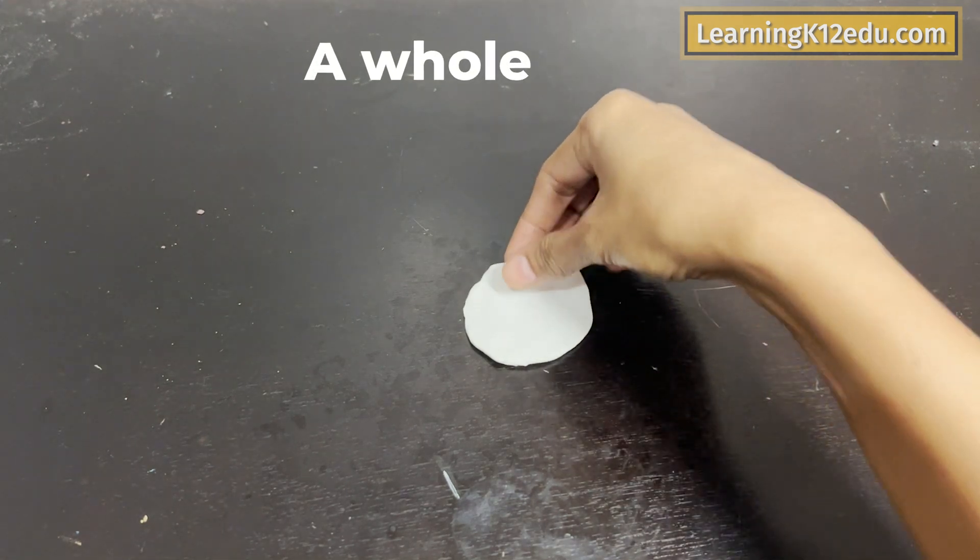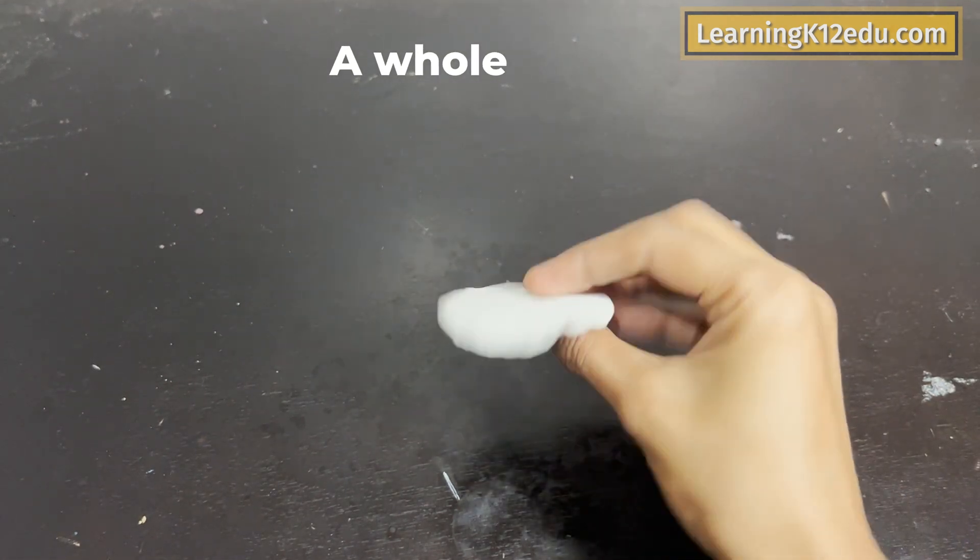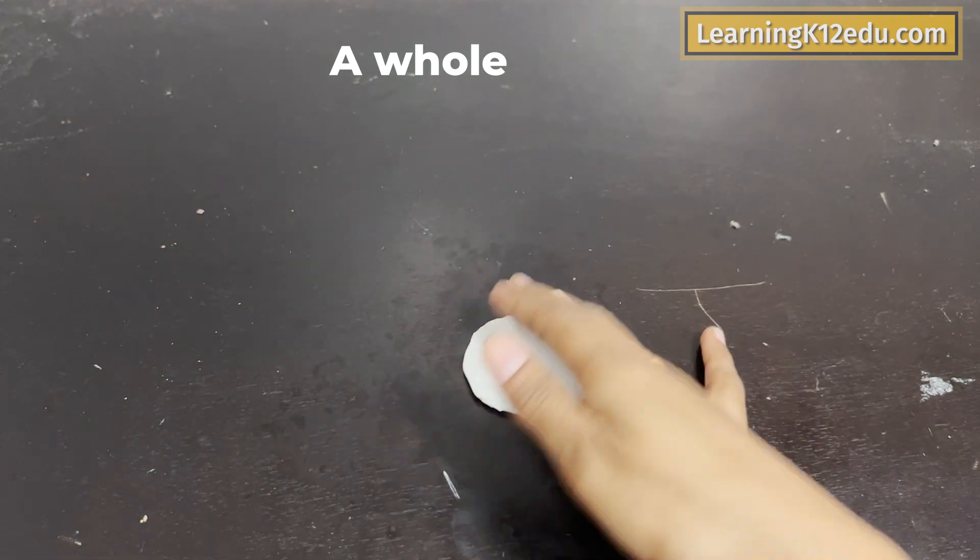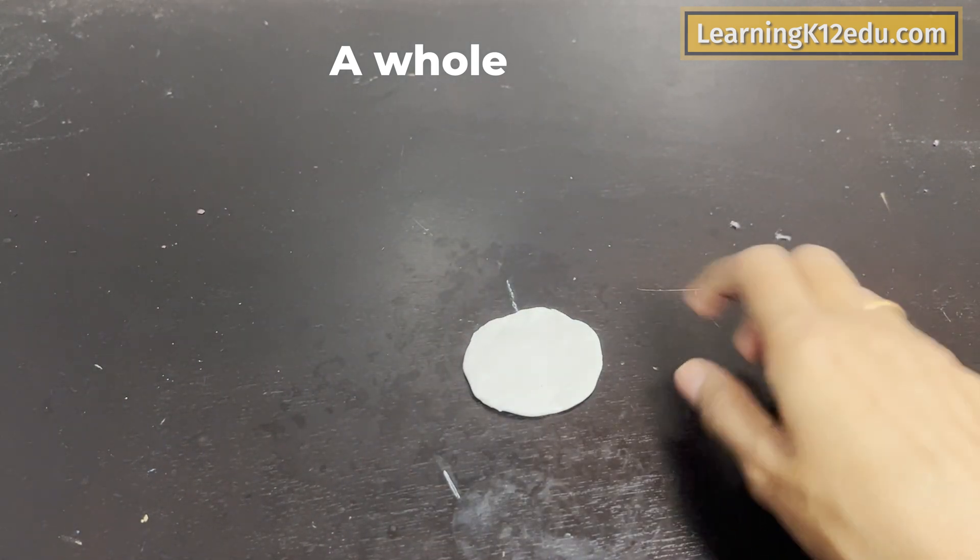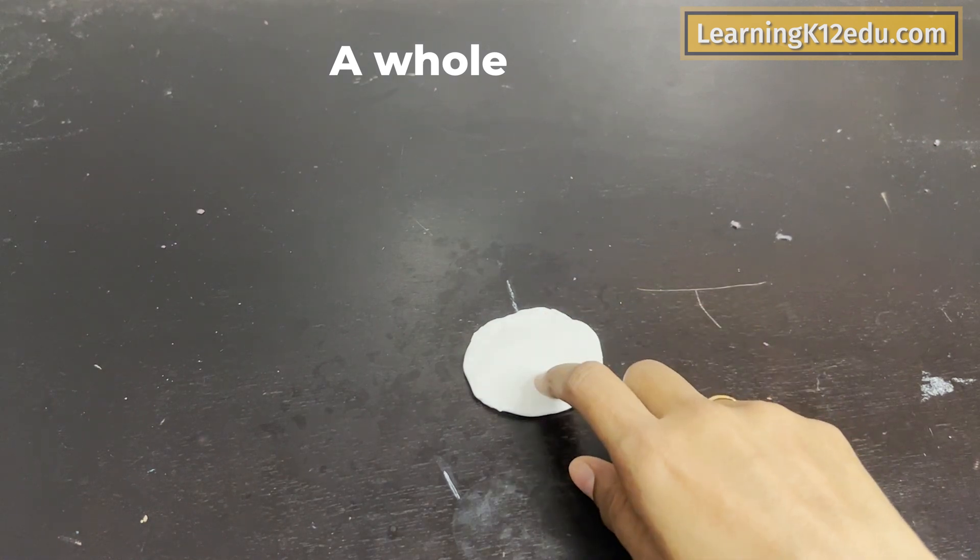This is a whole piece of clay. Yeah, don't worry. It's a little irregular circle, but consider it a proper circle. So this is called a whole piece of clay.